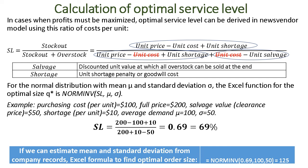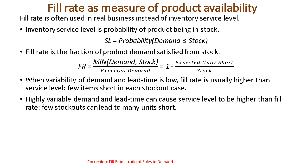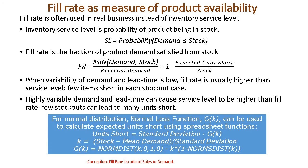If we know the service level, we can find the optimal order size using Excel's normal inverse formula. Service level is the probability of demand being equal to or less than stock — that is, the probability of being in stock. In practice, businesses, especially retailers, often use fill rate instead of this stock-in probability, and it has a different formula giving different results from service level. Fill rate can also be calculated using Excel.